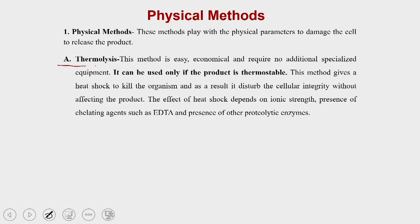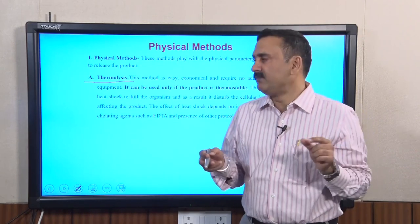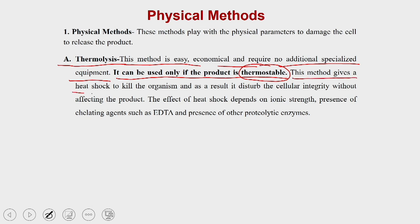The first method is thermolysis. Thermolysis means giving thermal stress — varying the temperature of the cell in a very short span of time — a process known as heat shock. This method is very easy, economical, and requires no additional specialized equipment; you can simply use incubators or a water bath. This method gives a heat shock to kill the organism, disturbing cellular integrity without affecting the product.